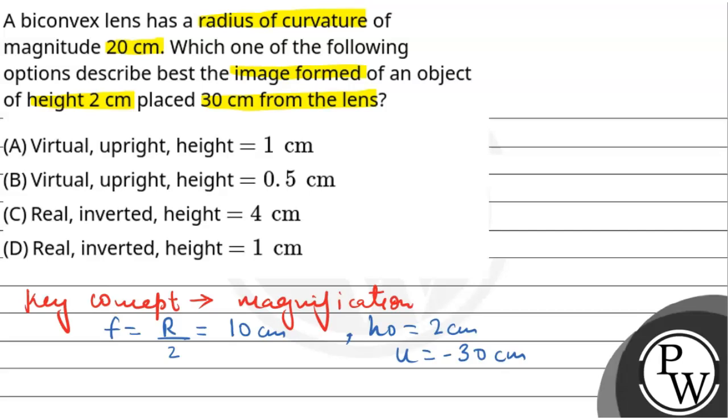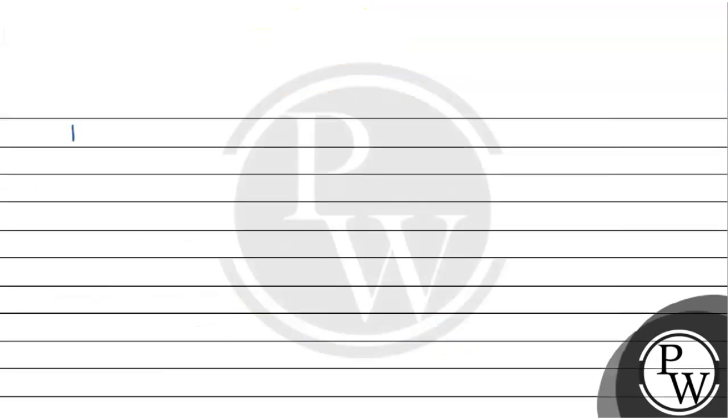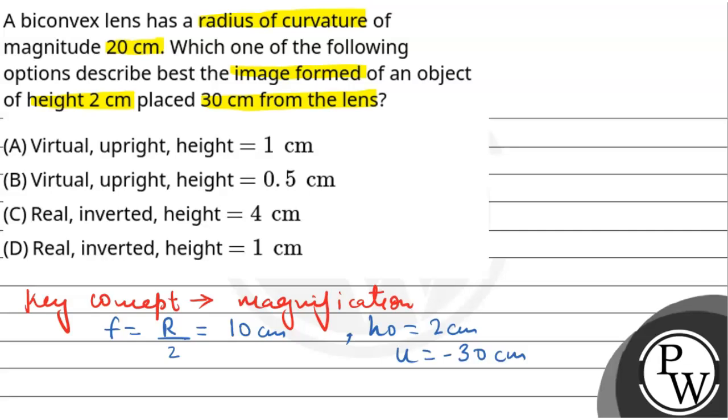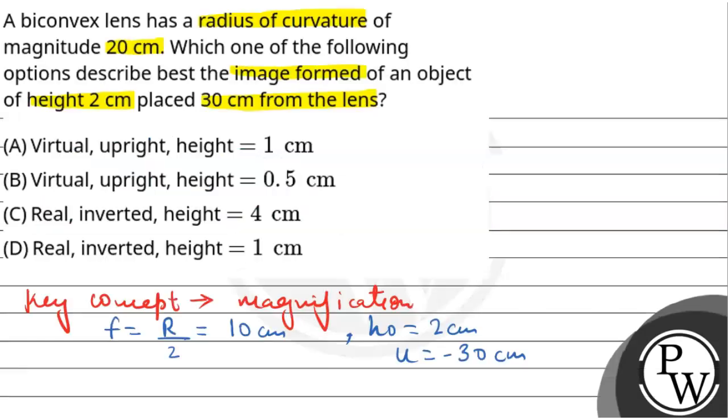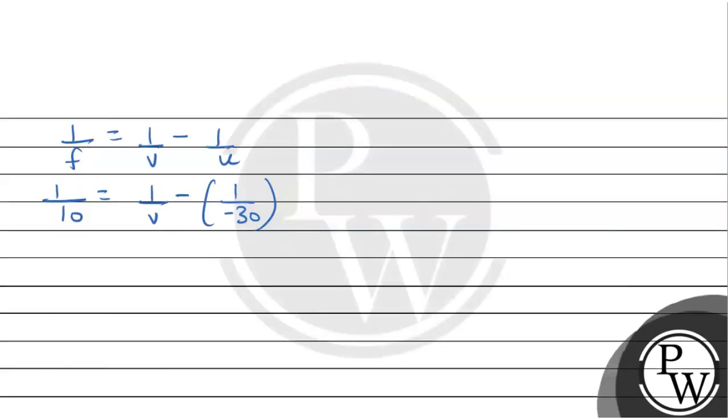First of all, we have to find our image distance using the lens formula: 1 upon f equals 1 upon v minus 1 upon u. So our f is 10 cm and u is -30 cm. 1 upon 10 equals 1 upon v minus 1 upon minus 30. We are getting 1 by v equals 1 by 10